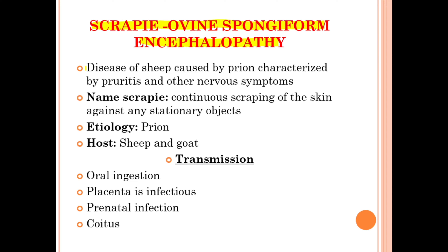Scrapie is the disease of sheep caused by prions, characterized by pruritus and other nervous symptoms. The name 'Scrapie' comes from the behavior of infected animals, which continuously scrape their skin against any stationary object. The etiology of this disease is the prion, and the hosts are sheep and goat. Transmission can occur due to oral ingestion of infected material. The placenta is also infectious.